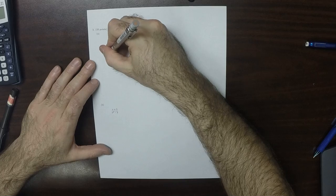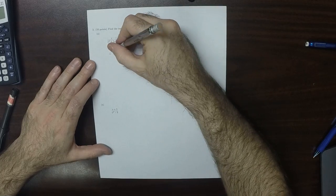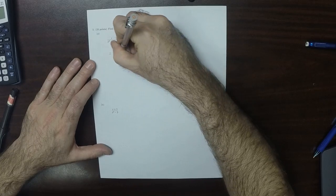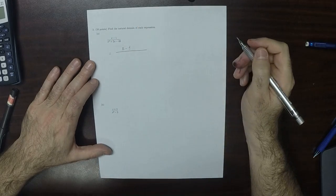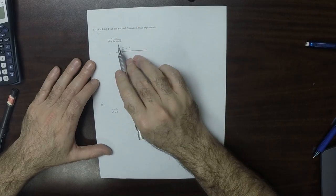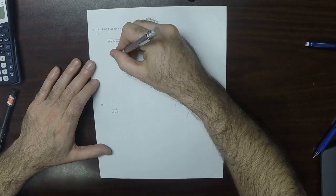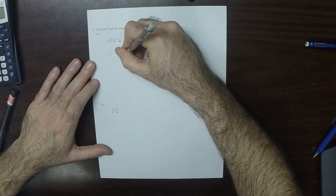So in this case, we need to factor the denominator. So that would be x minus 1 in the numerator, and then the denominator is monic. So can we think of two numbers whose product is negative 48 and whose sum is 2? How about 8 and negative 6?